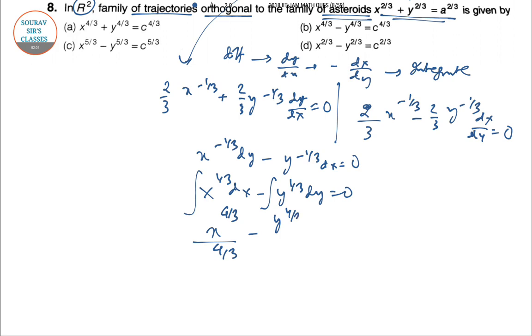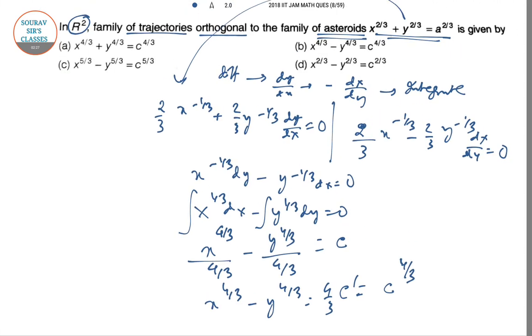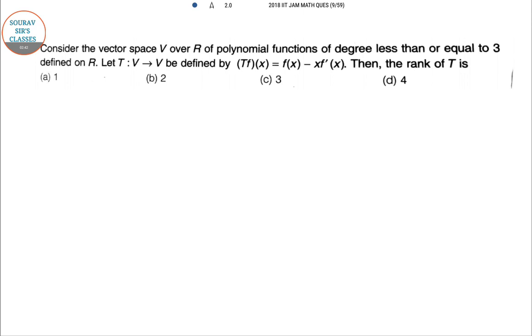So this will be integration. So x to the power 4/3, 4/3 minus y to the power 4/3, 4/3 constant. So 3/4 multiply 4/3 c dash integrating constant, then we can write this pattern match x^(4/3) - y^(4/3) = c^(4/3).